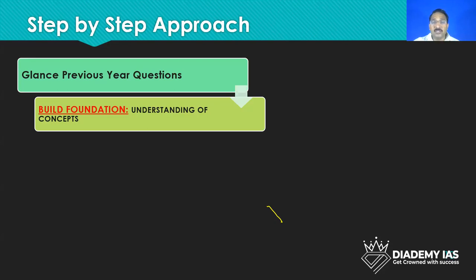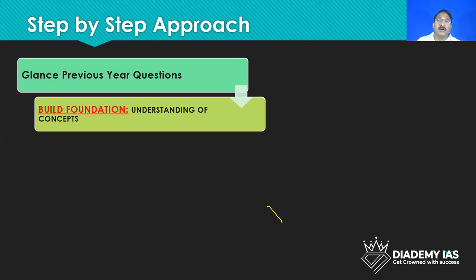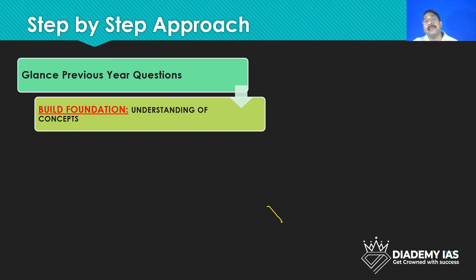Then comes building the foundation. Concept building is very, very important. In the first reading or even while revising, always keep thinking about how a concept impacts various aspects. For example, if there is an increase in money supply — how will it impact inflation, the foreign exchange rate, the poor, the agriculture sector? Try to interlink. What is the impact of Corona? If the government came up with expansionist fiscal and monetary policy, what is the implication for poor people, for inflation?